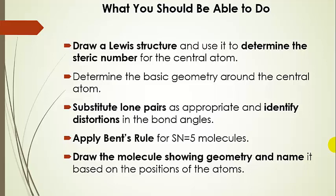What you should be able to do — for all parts covered so far plus the upcoming octahedral geometry — is: draw a Lewis structure, determine the steric number for the central atom, determine the basic geometry based on that steric number, add lone pairs to the central atom as necessary, identify distortions in bond angles, and apply Bent's rule for steric number 5 molecules only. For octahedral molecules, all positions are equivalent so we won't use Bent's rule. Then draw the molecule showing geometry and name it based only on atom positions. Part 6 on octahedral molecules is coming up.